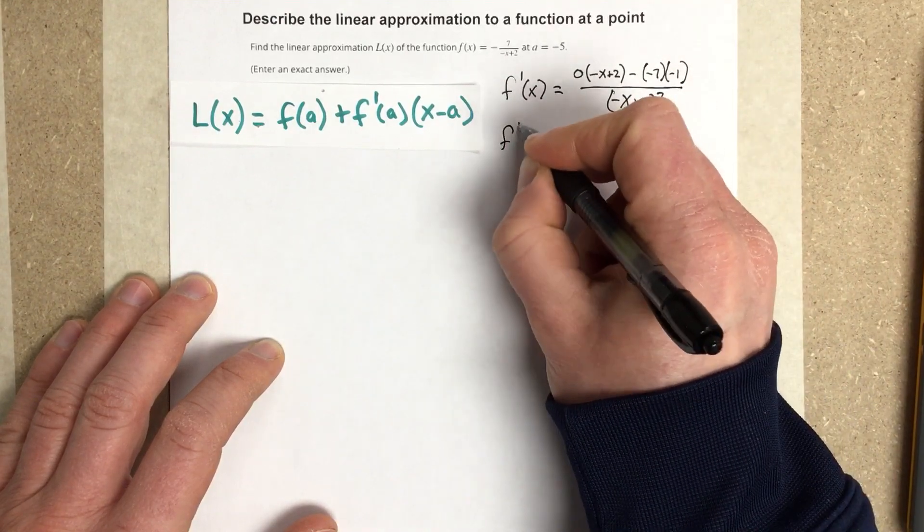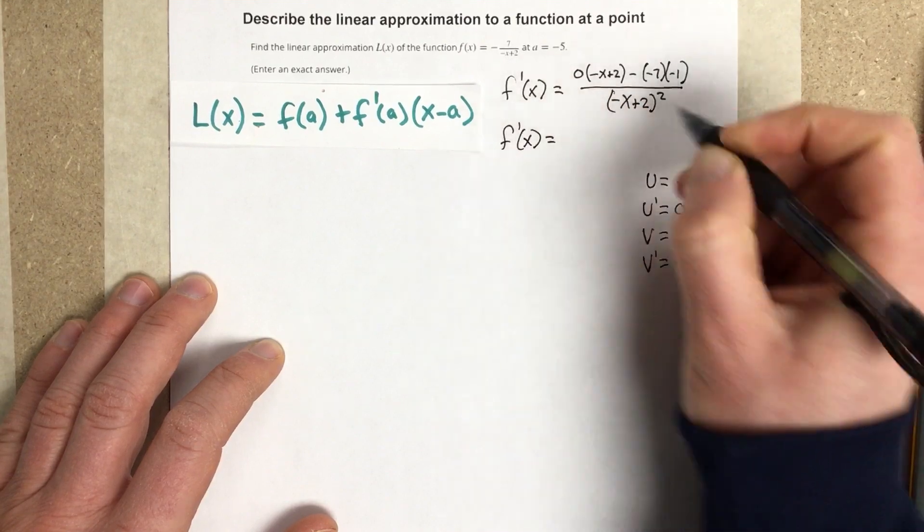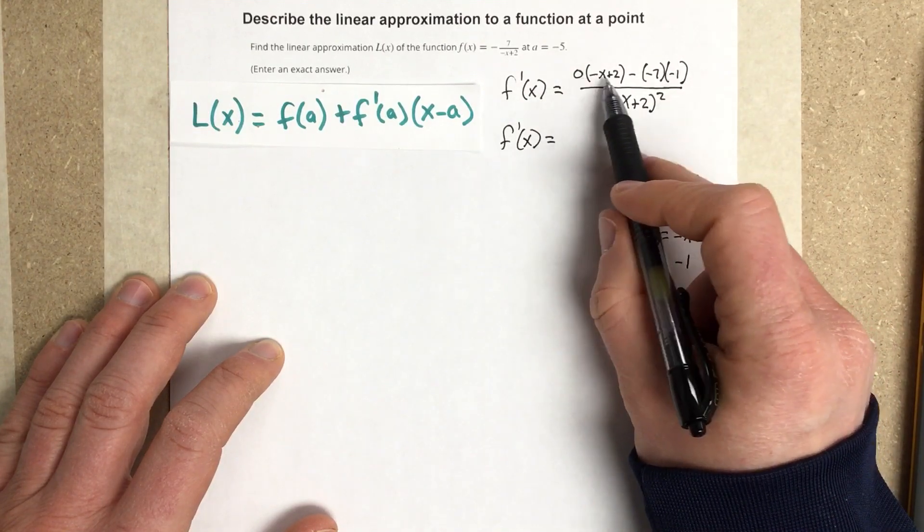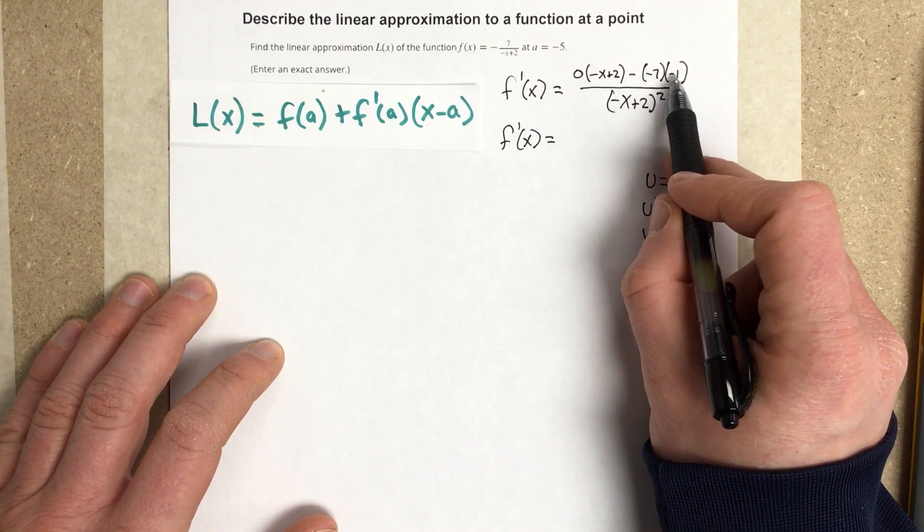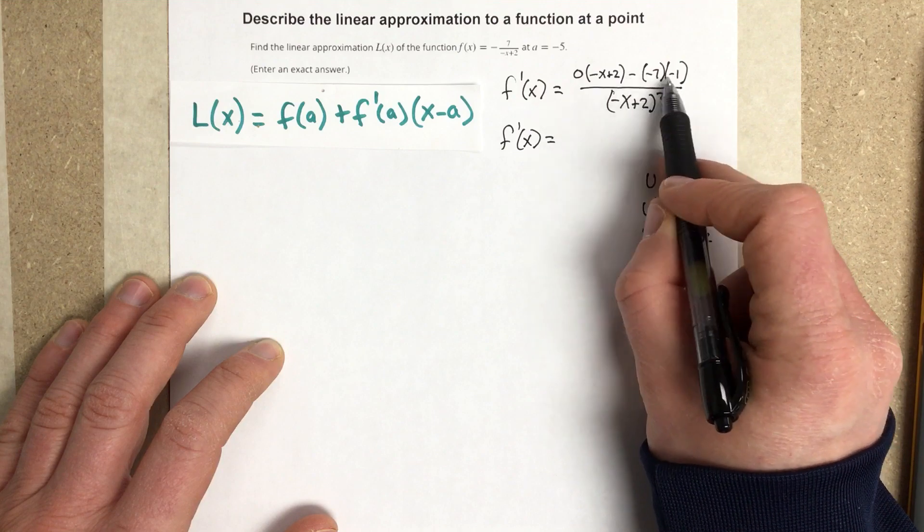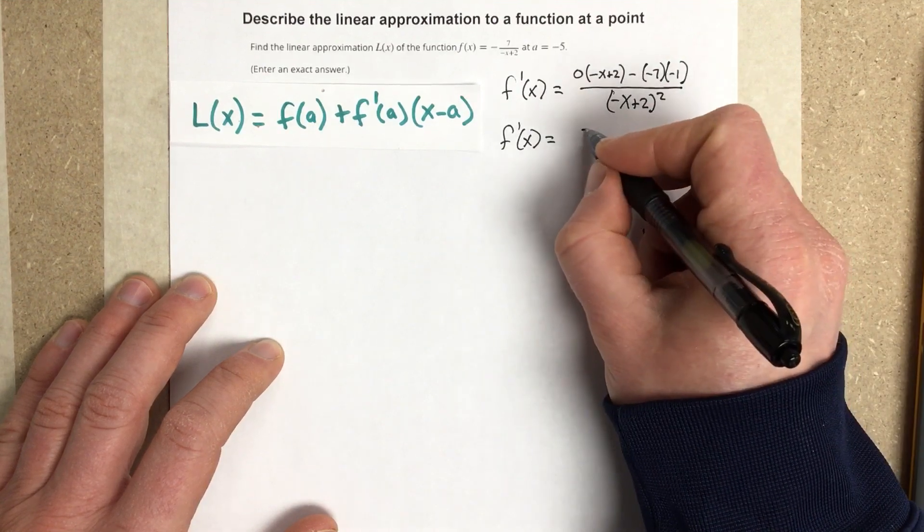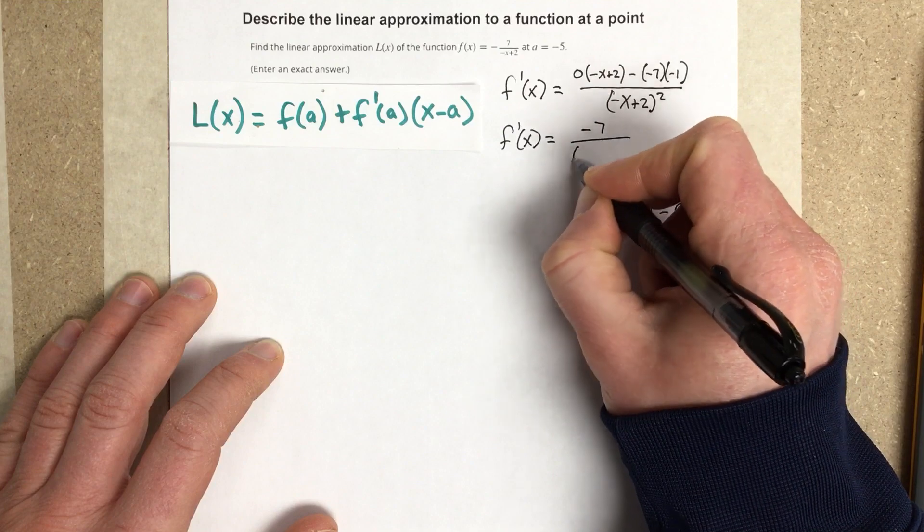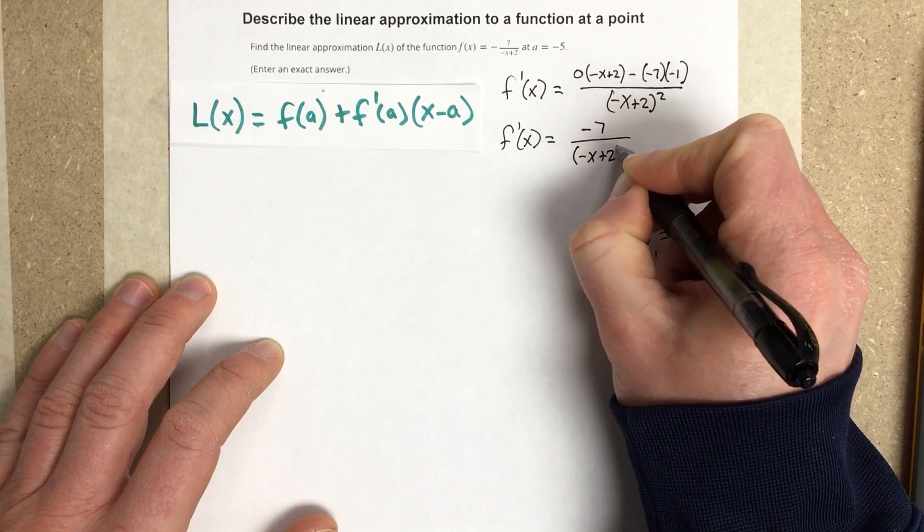So F prime of X, when we simplify the top, that's 0 minus 7 minus 1, and then we have 3 negatives, so that's actually negative 7 over negative X plus 2 squared.